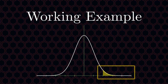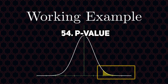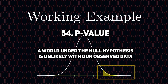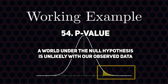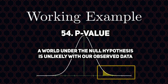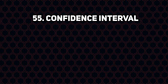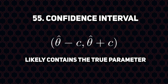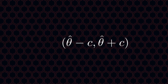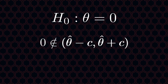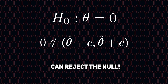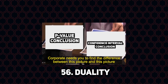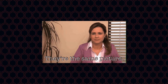We want to know the probability of observing our sample mean or a more extreme value. This probability is known as the infamous p-value. If this probability is low enough, it suggests that it's unlikely that the world under the null hypothesis would have produced the sample mean that we got. We can also make a decision based on a confidence interval — a range of parameter values that could have realistically produced our sample mean. If this interval doesn't contain the null hypothesis value, then we can also reject. There's a duality between p-values and confidence intervals, so we know they'll lead to the same decision.